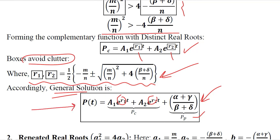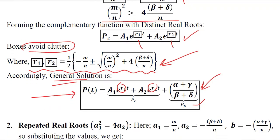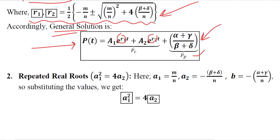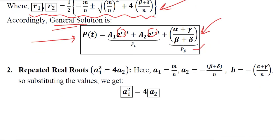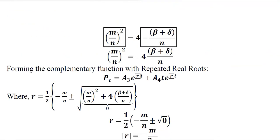Now we talk about the second possibility, which is the repeated real roots case, where the discriminant is equal to 0 — in other words, the first term is equal to the second term. The values of a1, a2, and b are already found. Putting their values, we get this expression. This time there is an equal sign, whereas it was a greater-than sign in the distinct real root case.